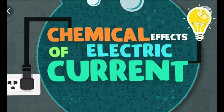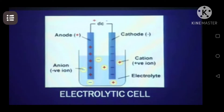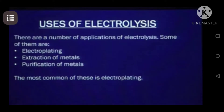Good morning dear students. In the previous video we started our new chapter, chemical effects of electric current, and we began electrolysis. Electrolysis is the process of breaking up of an electrolyte solution chemically on passing an electric current through it. A substance which conducts electricity in liquid state or when dissolved in water breaks chemically — that is known as an electrolyte. When an electrolyte is dissolved in water it breaks up into positive and negative charged particles known as ions. Electrolysis is carried out in an electrolytic cell.